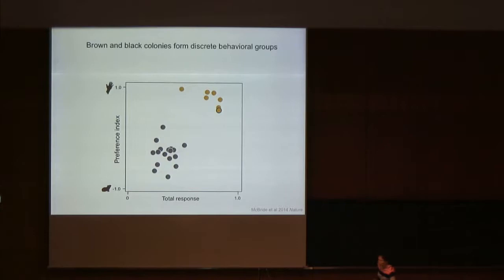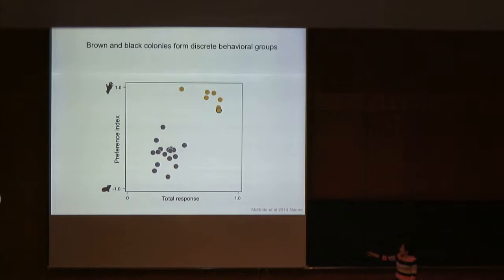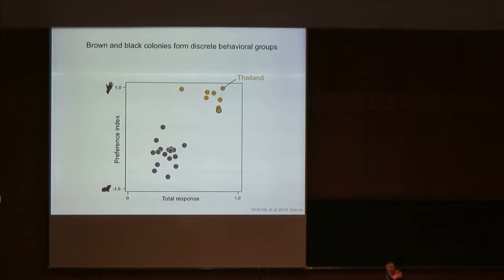Although I previously showed data on host preference, the total response rate also differs — domestic mosquitoes respond at high rates and forest mosquitoes respond at relatively low rates. When you combine these two variables you see very discrete behavioral clusters. The behavior of domestic mosquitoes in Kenya exactly reflects the behavior of a non-African population from Thailand, and the behavior of these forest mosquitoes exactly reflects the behavior of other African populations, for example in Uganda.